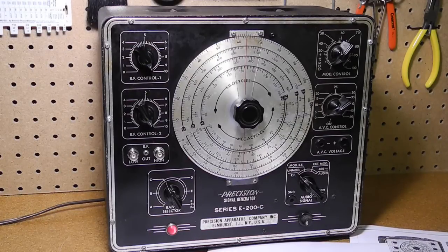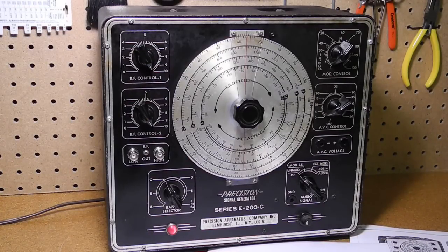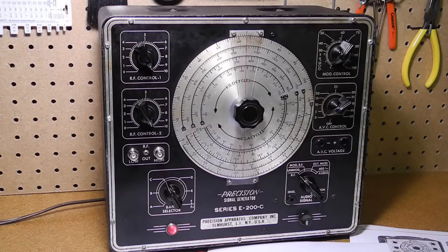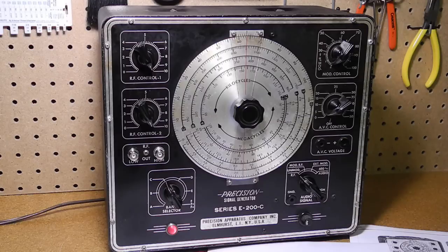The E200C was a popular RF signal generator produced from the 1940s through the 1960s. While the manual discusses FM and TV applications, on its own it was really only suitable for AM and shortwave radio work.